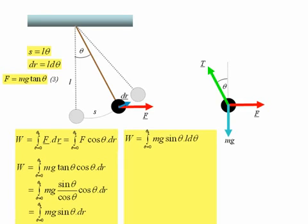Now since DR is equal to L D theta, then the work done is equal to MGL sin theta D theta.